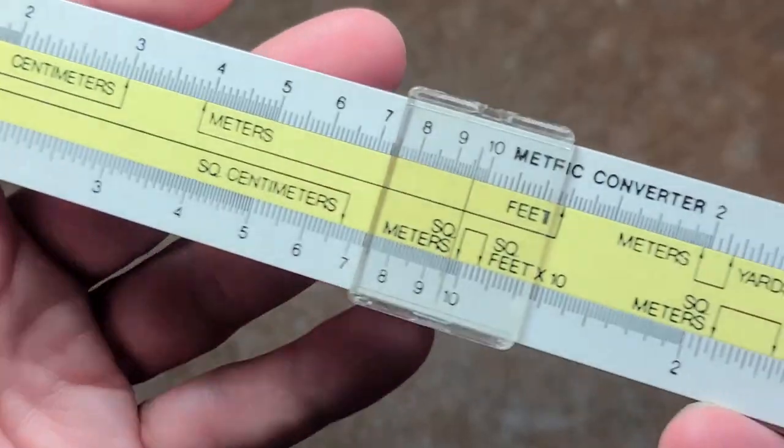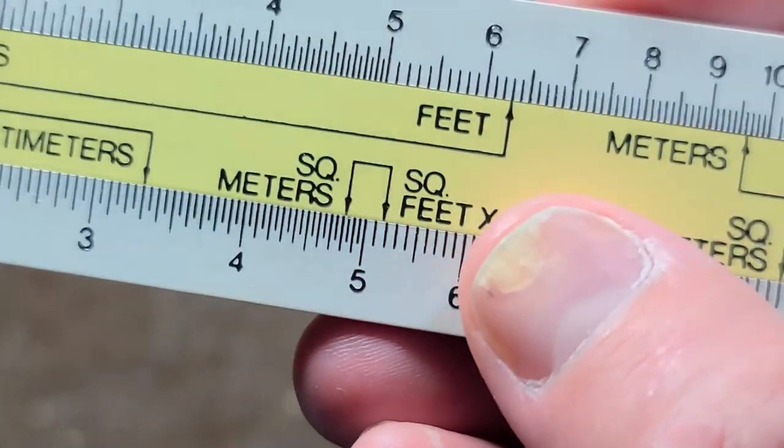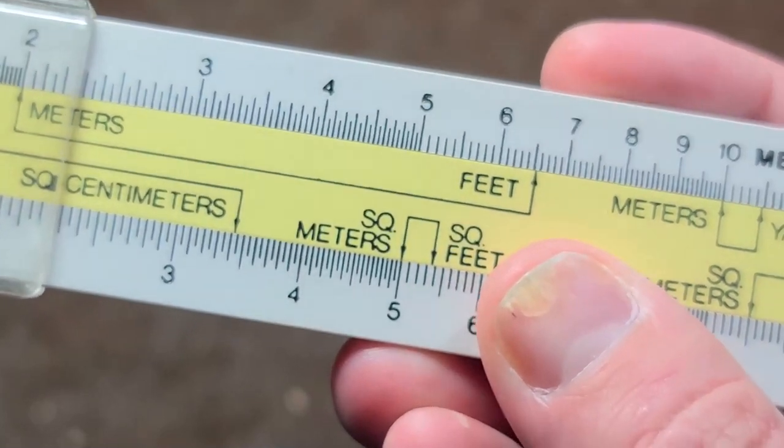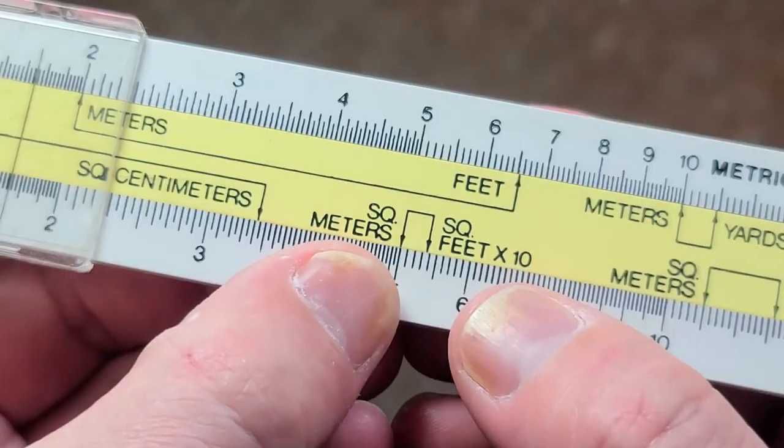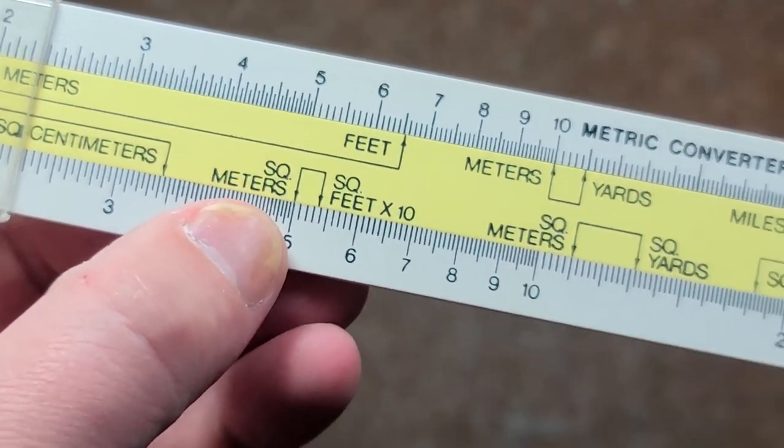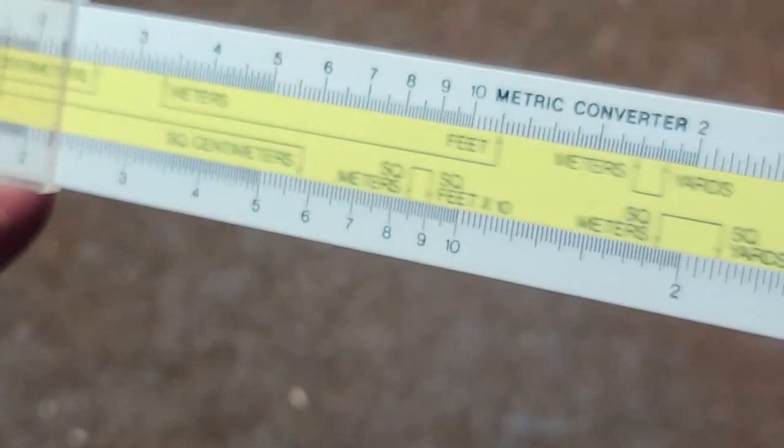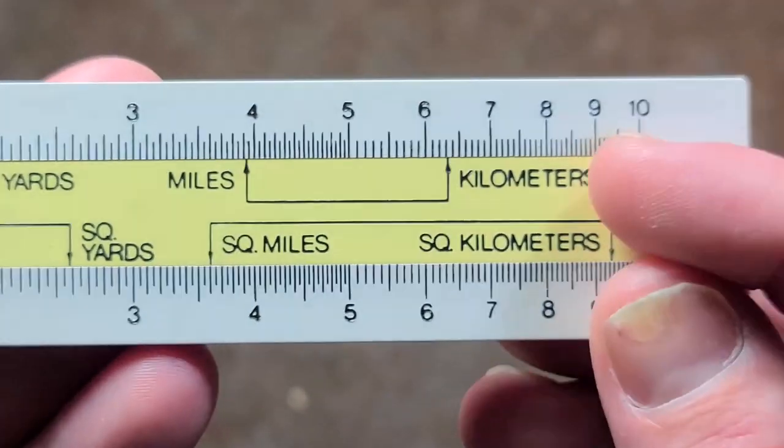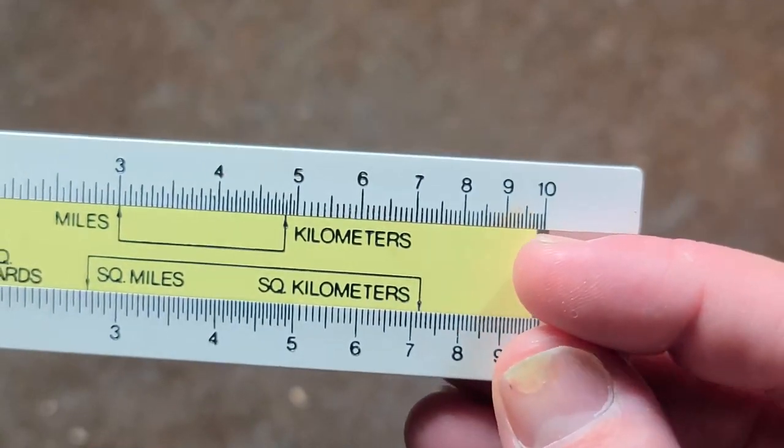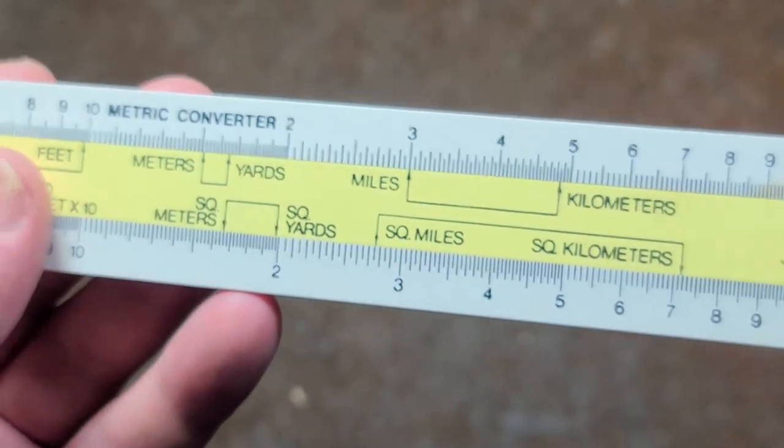And to tell you the truth, this is kind of a neat desk item just for basic conversions, such as five square meters here. Get that lined up to the five. We can see this is square feet by 10, so five square meters is right around 55 square feet. Definitely pretty handy, and of course miles and kilometers. Three miles would be somewhere in the range of four and seven eighths, 4.8 kilometers.